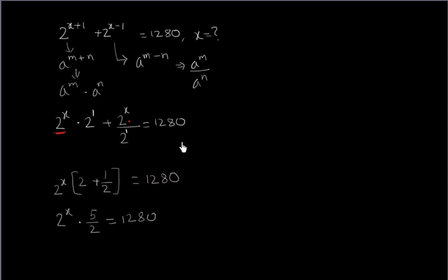So 2 to the power x equals 1280 into 2 by 5, which gets the reciprocal.